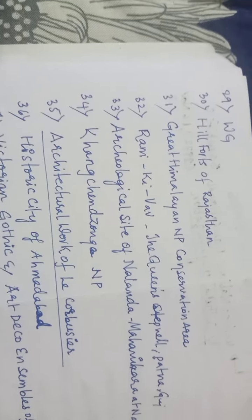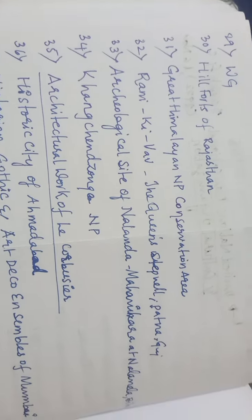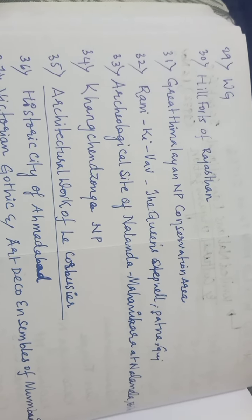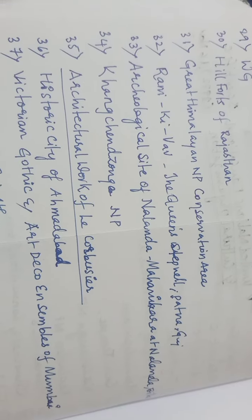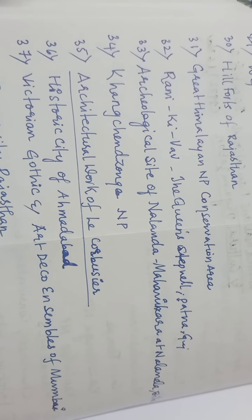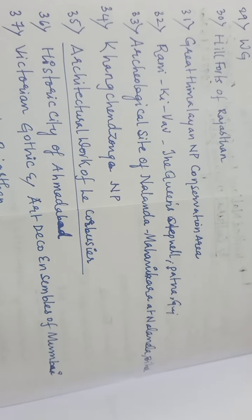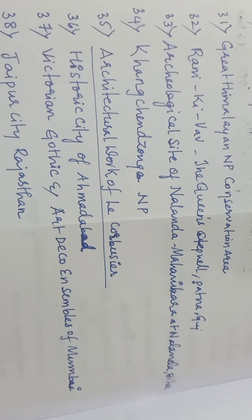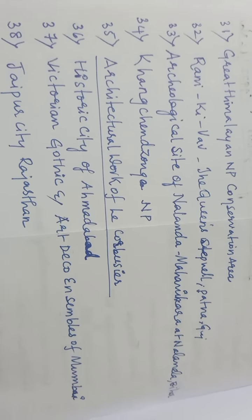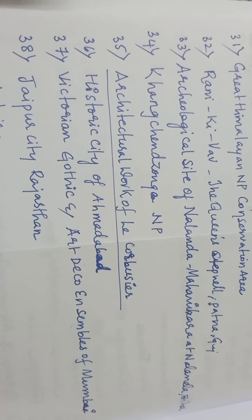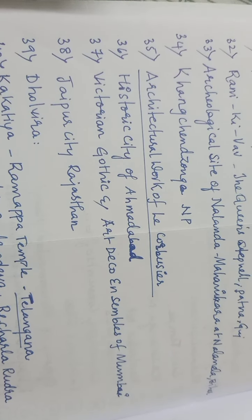The Western Ghats, hill forts of Rajasthan, the Great Himalayan National Park Conservation Area, Rani ki Vav known as the Queen's Stepwell present in Patan, Gujarat, the archaeological site of Nalanda Mahavihara at Nalanda, Bihar, and Kanchenjunga National Park which is present in Sikkim.